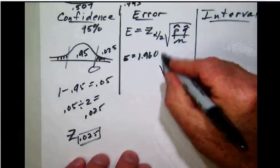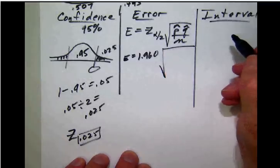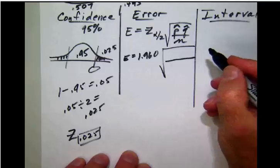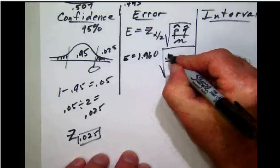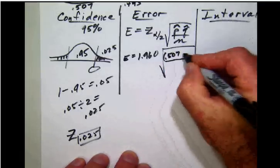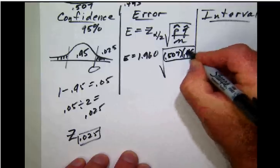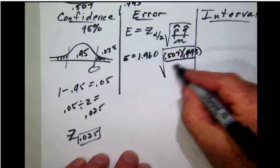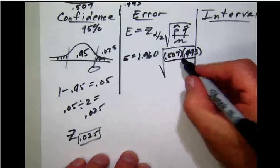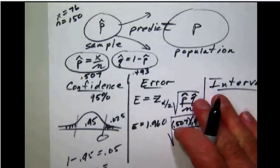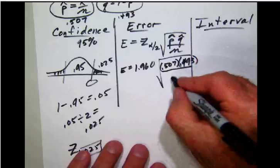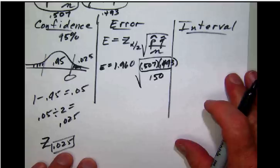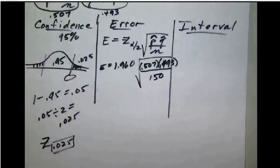Now we're going to need to multiply that times this gigantic square root. Inside the square root, we're going to have p hat multiplied by q hat, which as we said was 0.507 multiplied times 0.493. We're going to divide that by this n, which we said was 150. So we're going to plug that in here. And that's the math that we have to do. Kind of a big sloppy error calculation.